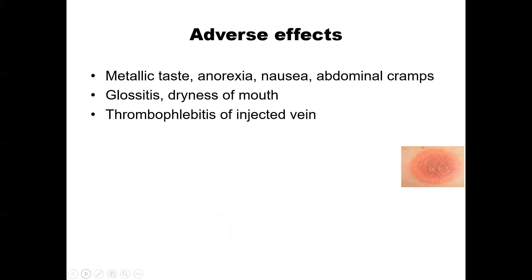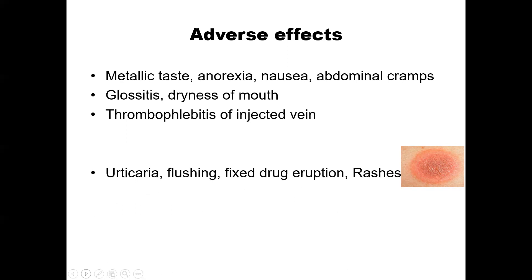The main adverse effects of metronidazole pertain to the GIT. Patients usually complain of metallic taste, anorexia, nausea, and abdominal cramps. Some even complain of glossitis and dryness of mouth. When metronidazole is given by the IV route, thrombophlebitis of the injected vein may occur. Uncommon ADRs include urticaria, flushing, fixed drug eruption, and rashes. Though fixed drug eruption is quite rare with metronidazole, this is a picture of a patient who developed a fixed drug eruption reaction with metronidazole.